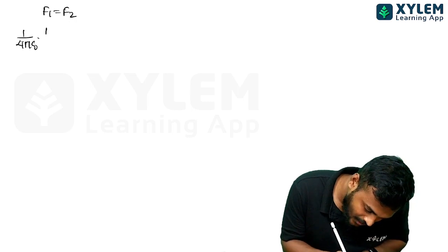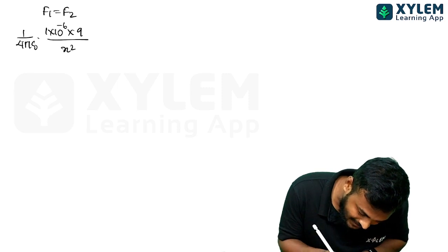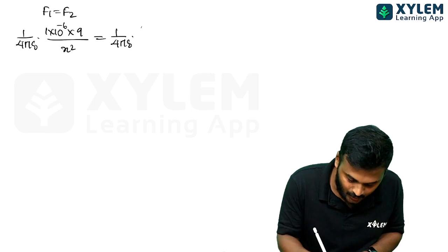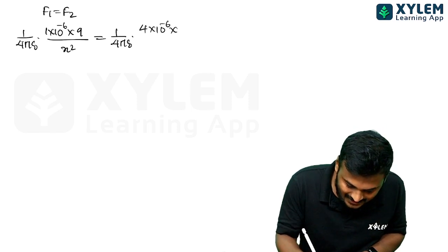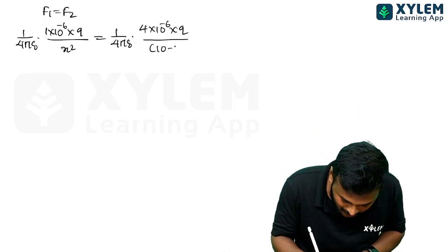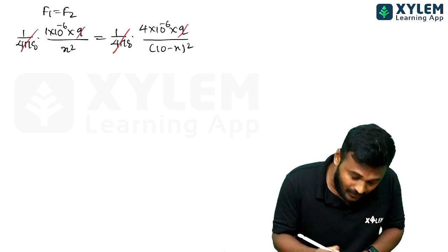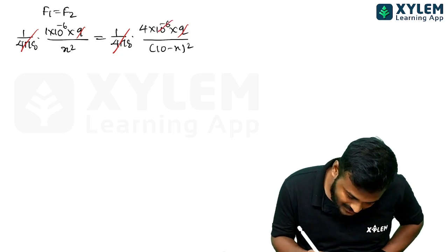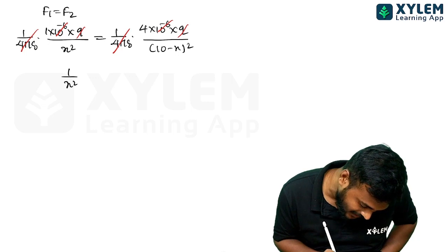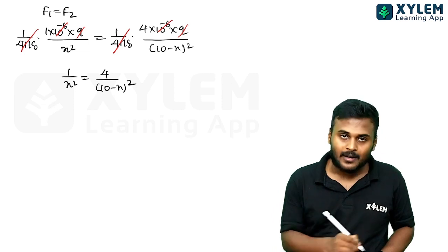Setting forces equal: 1 by 4π ε₀ multiplied by (1×10⁻⁶ × q) / x² = 1 by 4π ε₀ multiplied by (4×10⁻⁶ × q) / (10 - x)². The 1/4π ε₀, q, and 10⁻⁶ terms cancel on both sides, leaving 1/x² = 4/(10 - x)².